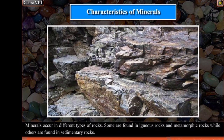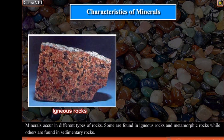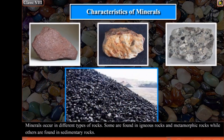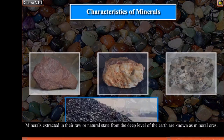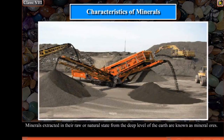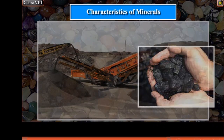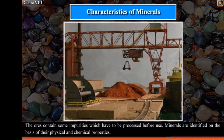Minerals occur in different types of rocks. Some are found in igneous rocks and metamorphic rocks, while others are found in sedimentary rocks. Minerals extracted in their raw or natural states from deep levels of the earth are known as mineral ores. The ores contain some impurities which have to be processed before use.